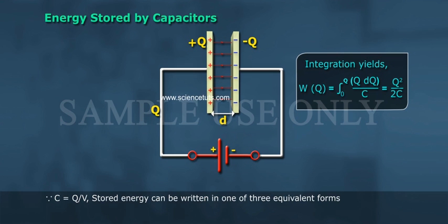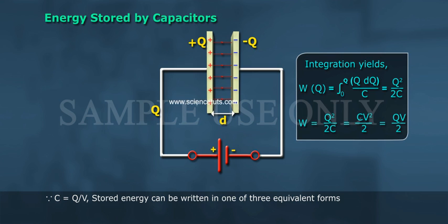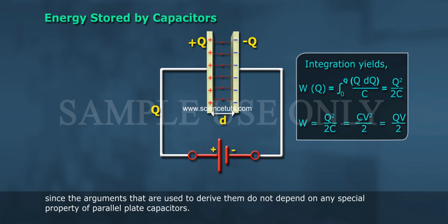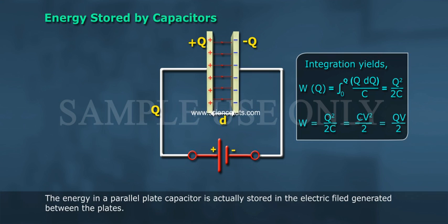Since C = Q/V, the stored energy can be written in one of three equivalent forms: W = Q²/2C = CV²/2 = QV/2. These formulae are valid for any type of capacitor, since the arguments used to derive them do not depend on any special property of parallel plate capacitors.